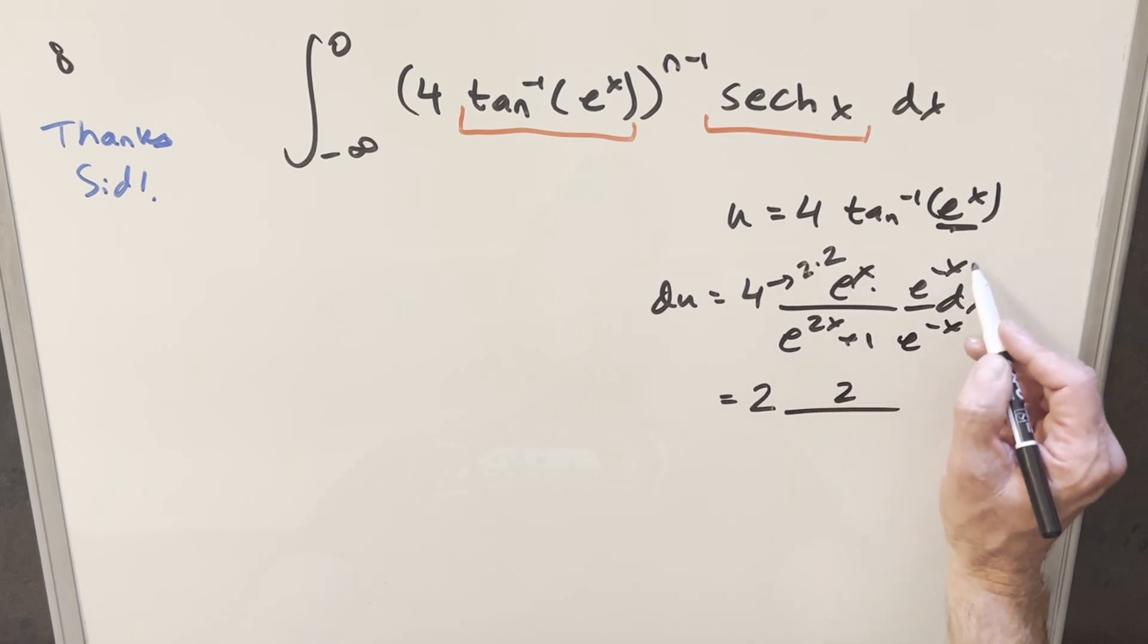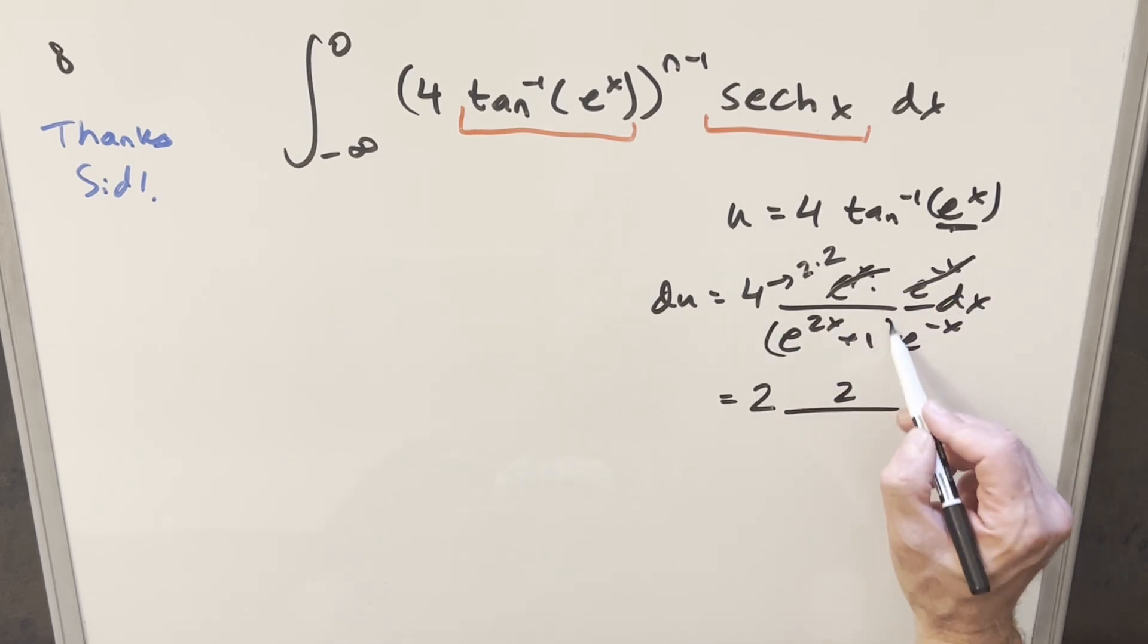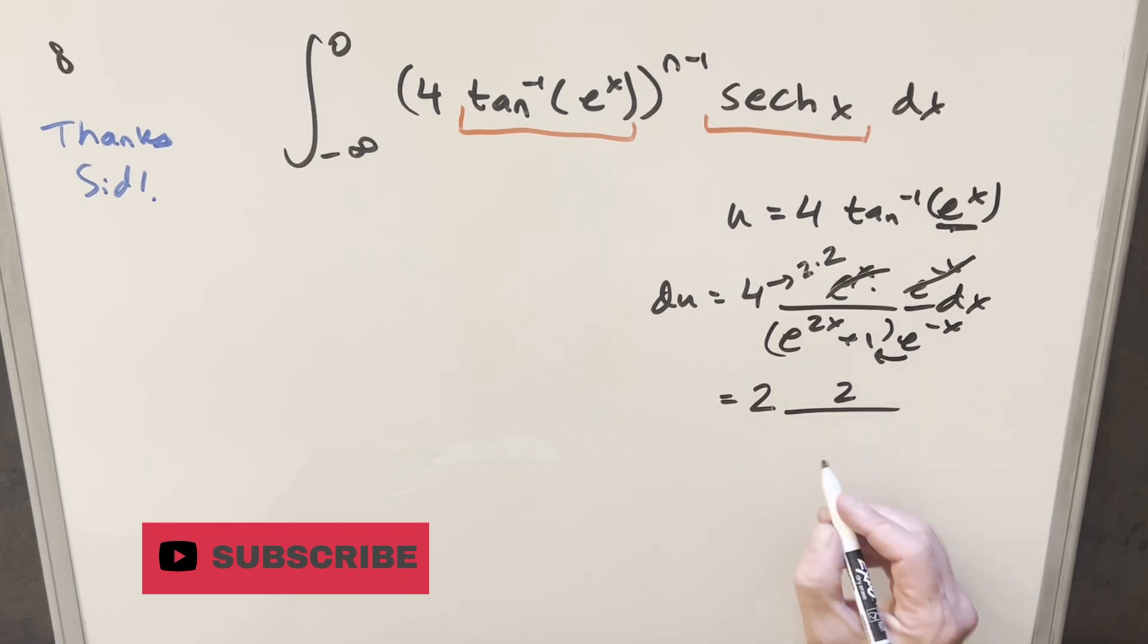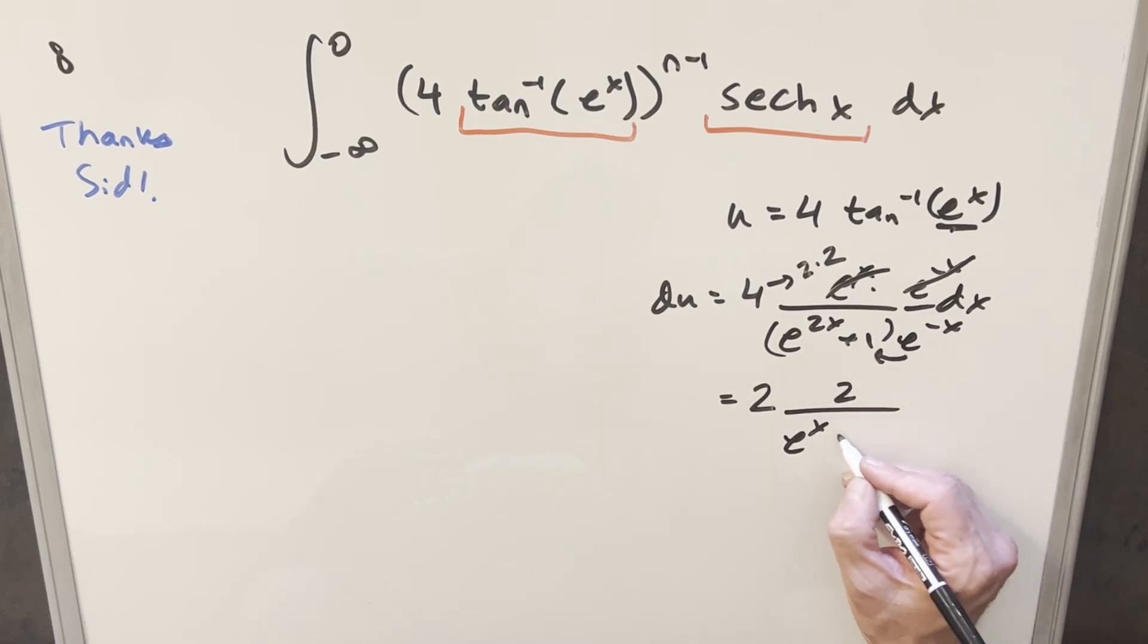This e to the x times e to the minus x, that's just one. Then distributing in the denominator, e to the minus x times e to the 2x is going to be e to the x, and then here one times e to the minus x that's just going to be plus e to the minus x.